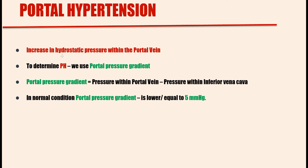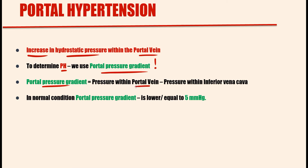Portal hypertension is a condition when pressure within the portal vein increases. In clinical practice, to determine portal hypertension we use the portal pressure gradient. Portal pressure gradient is the difference in pressures between the portal venous pressure and the pressure within the inferior vena cava or the hepatic vein. Portal pressure gradient is normally less than or equal to 5.